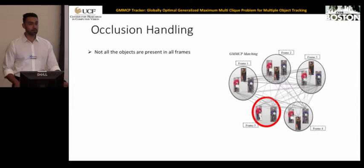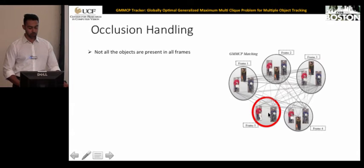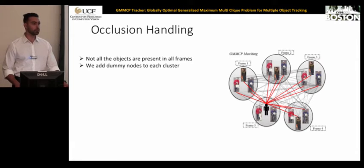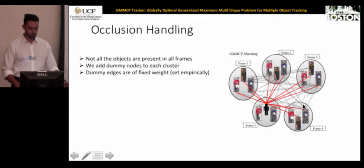To handle occlusion, objects are not present in all frames due to occlusion or pose variation. To address this, dummy nodes are placed in every cluster and treated the same as all other nodes in the graph. Each dummy node is connected to all other nodes, and the weights associated with these edges are fixed values found empirically.